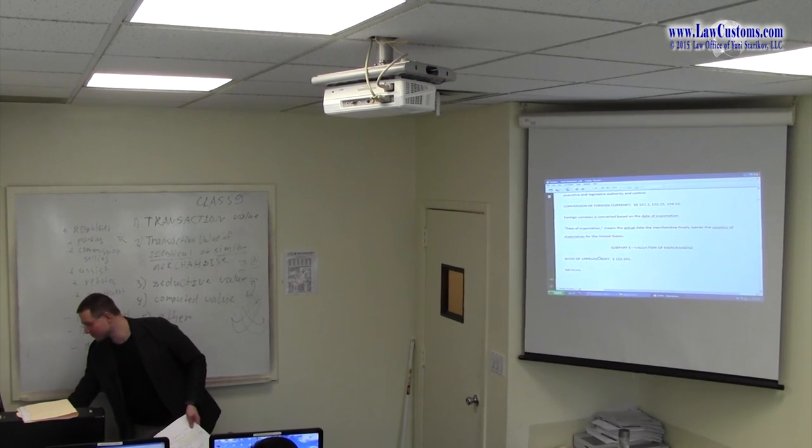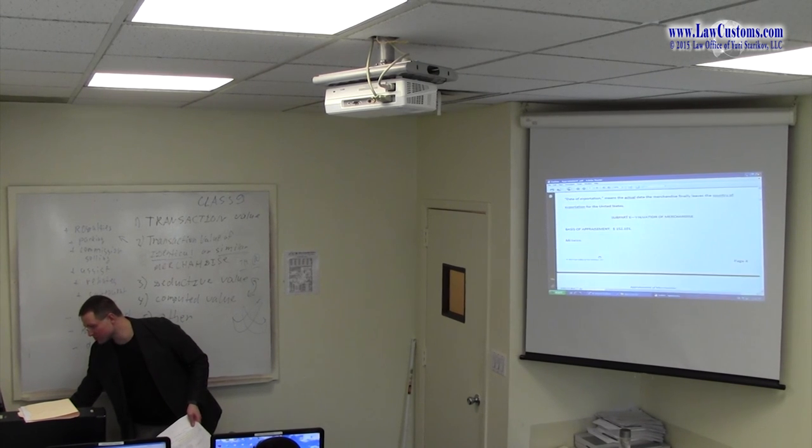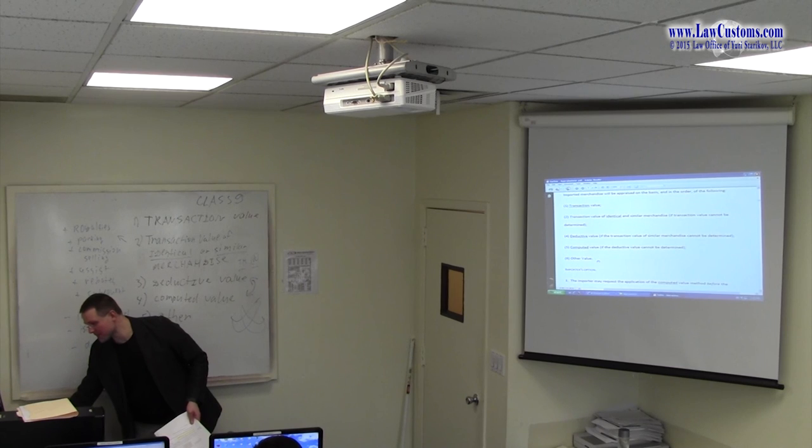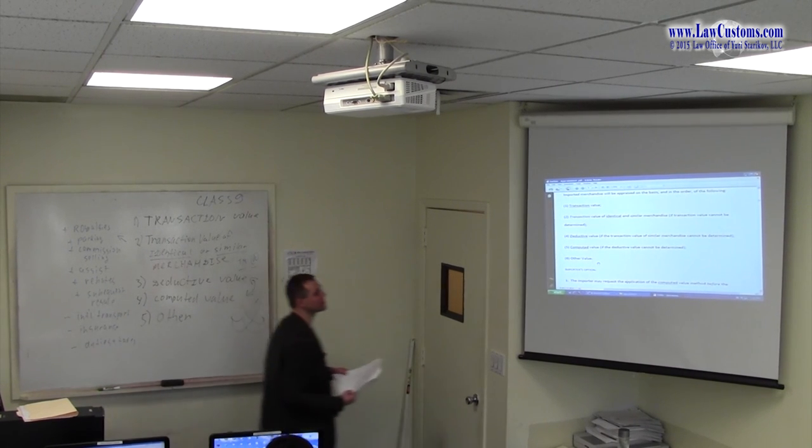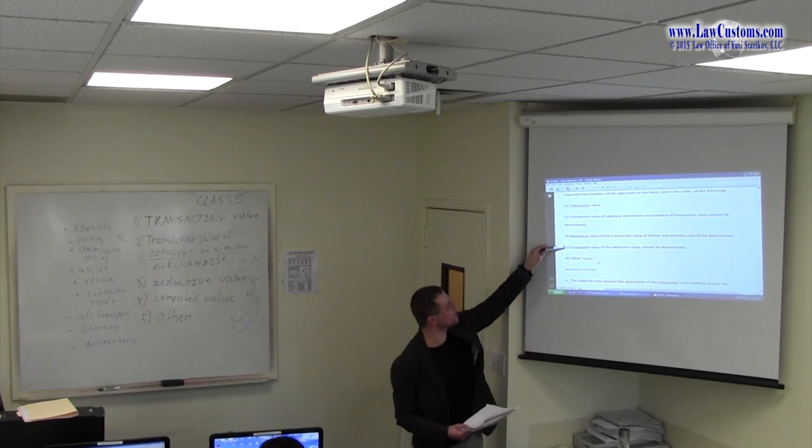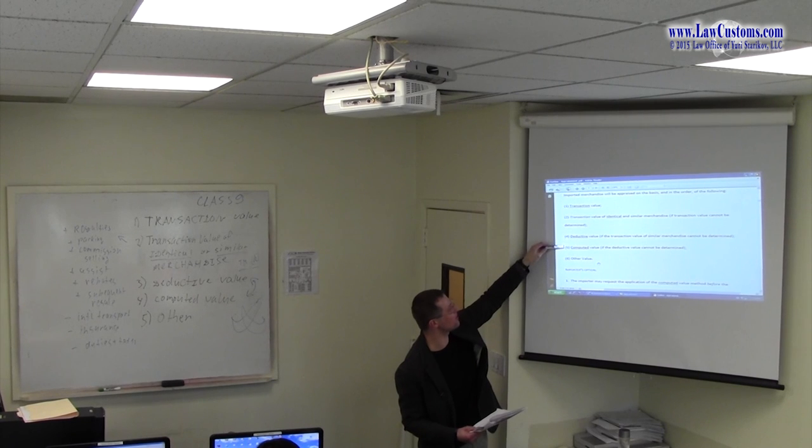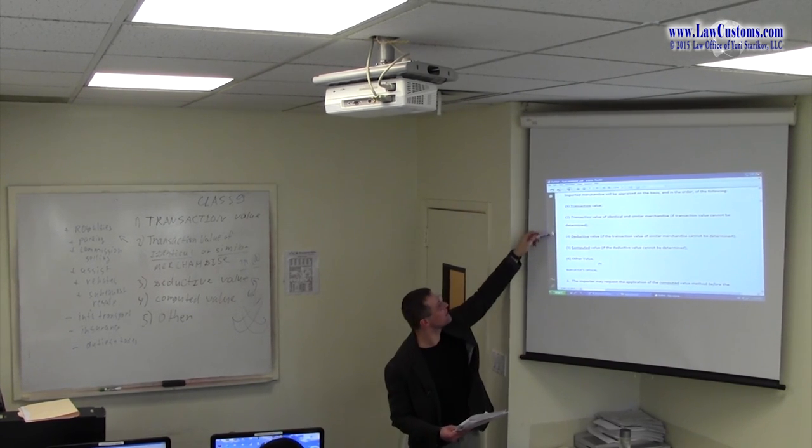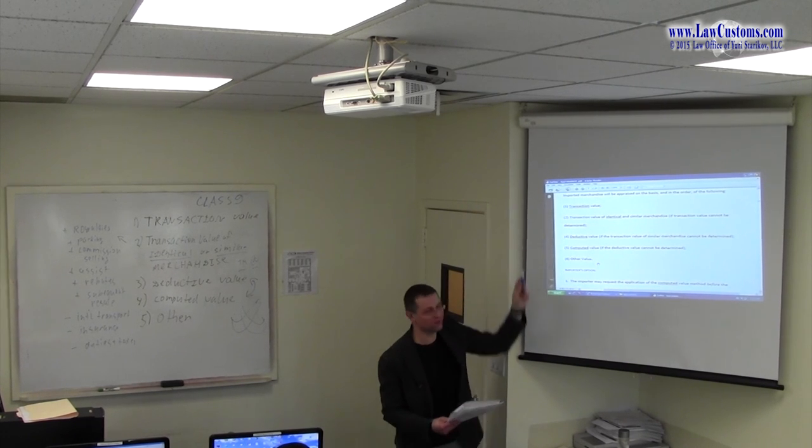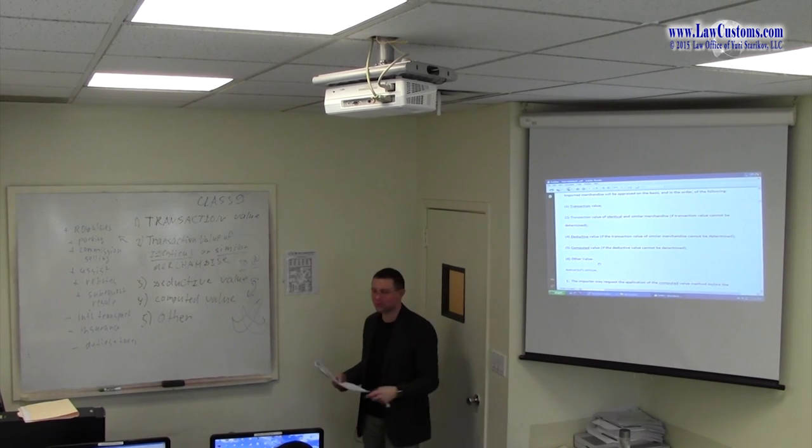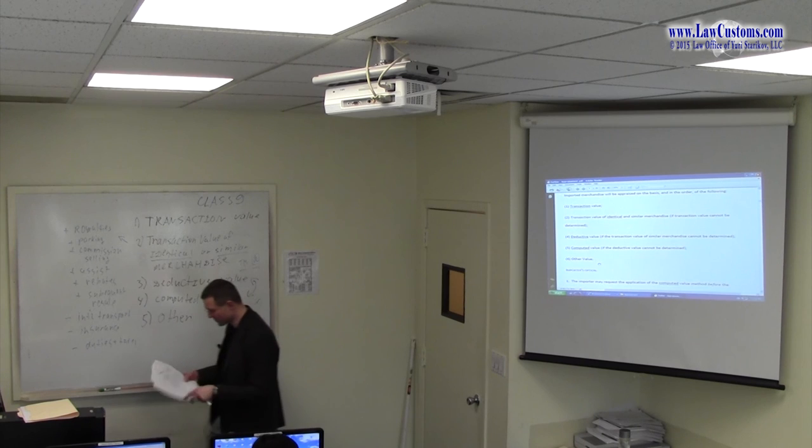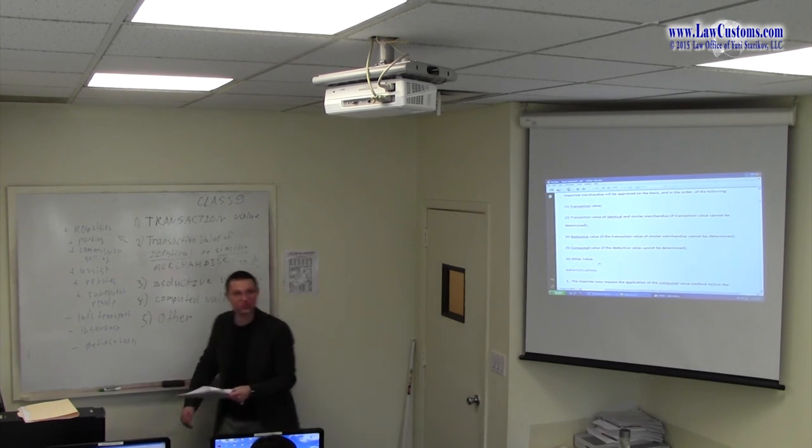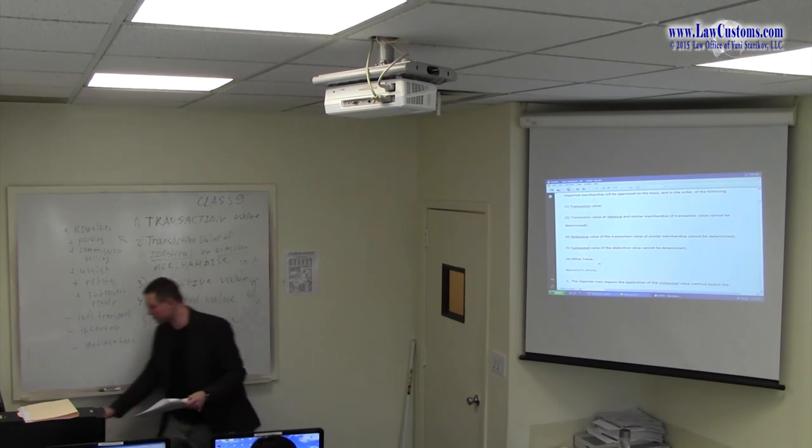Okay, so conversion to a foreign currency, date of exportation, and it must be the actual date. We talked about that. Basis of appraisement. Notice that it should be 3, 4, 5 instead of 4, 5, 6. I missed 3. So 1, 2, 3, 4, 5 methods instead of 6. It's a typo on my part I need to change that. And those are the basis that we will be dealing with in the coming hour or so.